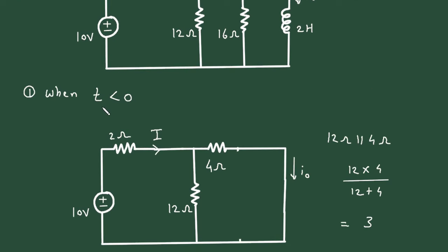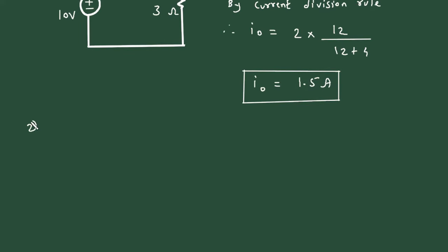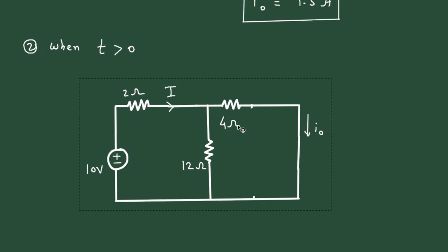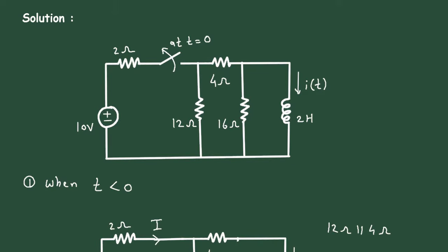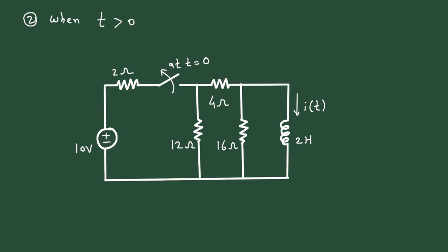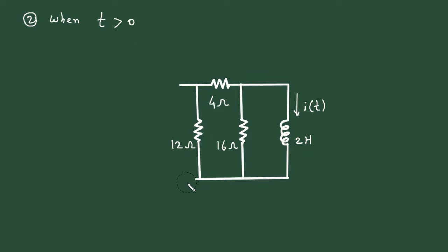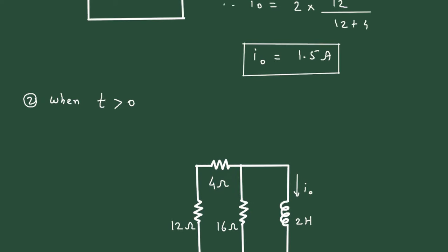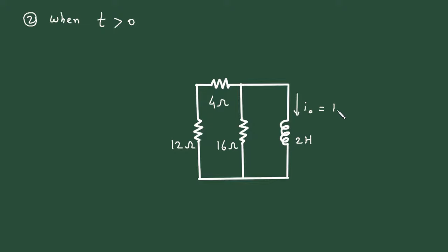Now the next condition is when T is greater than 0. When T is greater than 0, the switch will be open, and this part will be removed from the circuit. The current will be the initial current I₀, and we know the value of initial current is 1.5 amperes.